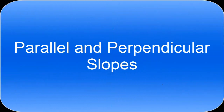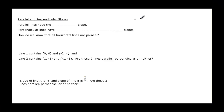This video will talk about parallel and perpendicular slopes. With parallel lines, if you look at two parallel lines, remember slope is the rate, and these two lines are going at the same rate, so they have the same slope.